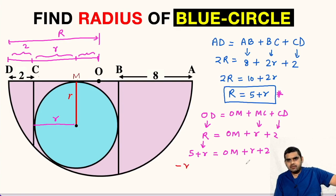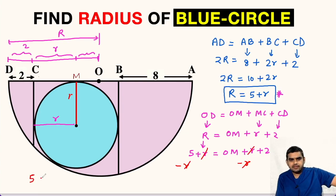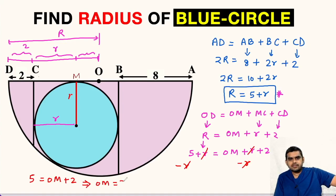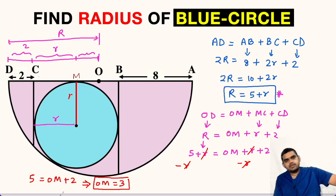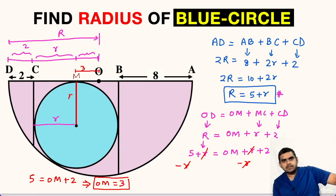We subtract r from both sides — the r terms cancel — and we get 5 equals OM plus 2. From here we get OM equals 5 minus 2, that is 3. So we have found the value of distance OM as 3 units. Let me clean the board.